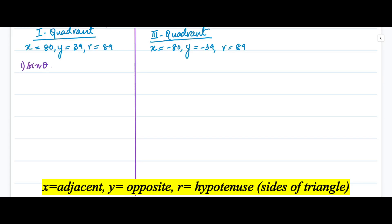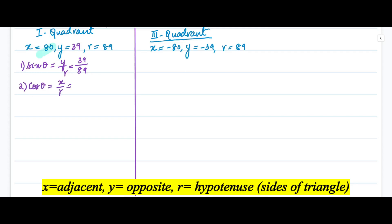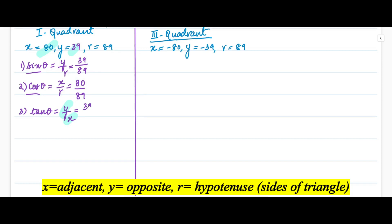For the first quadrant — sine theta's definition is y divided by r: y = 39, r = 89, so sine theta = 39/89. Cosine theta's definition is x divided by r: x = 80, r = 89, so cos theta = 80/89. Tan theta is y divided by x, the ratio of sine theta to cos theta: y = 39, x = 80, so tan theta = 39/80.